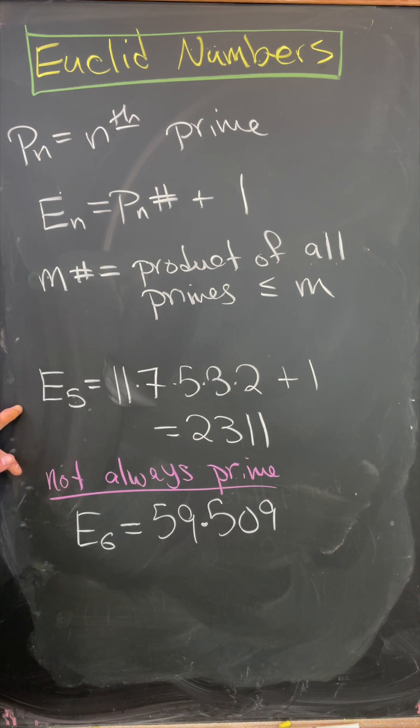So we can check that the fifth Euclid number is 11 times 7 times 5 times 3 times 2 plus 1. That is 2,311.